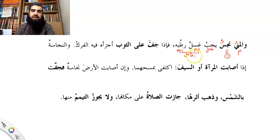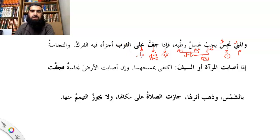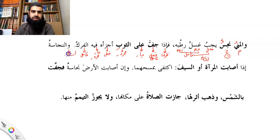We've got this jumlah here — all of this actually becomes the second khabar. So najasun is the first khabar, and all of that is the second khabar. Fa'idha — that's the zharf. Jaffa is the fi'al, and the fa'il goes back to najas. Ala is jar, thawb is majroor. Then ajza'a — farak is the fa'il, and the hu is the maf'ul bihi. Fi'he is the jar-majroor. Wao is the isti'naf.